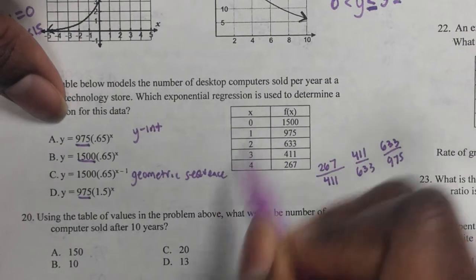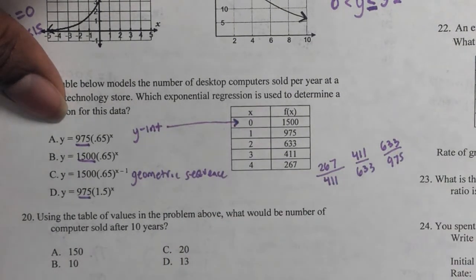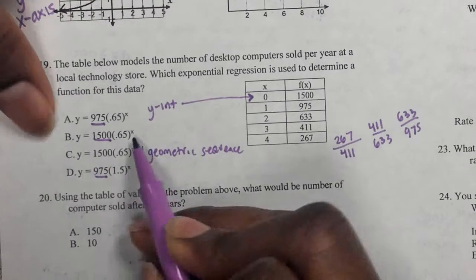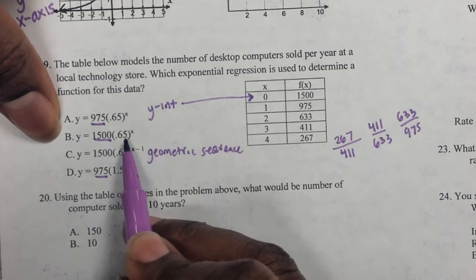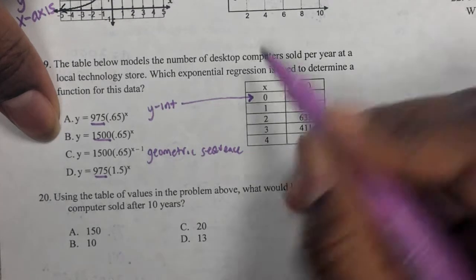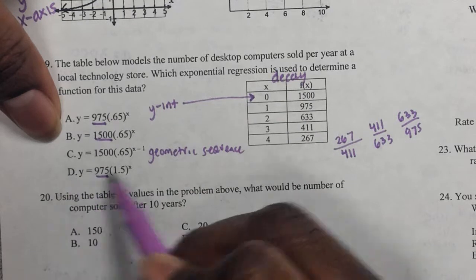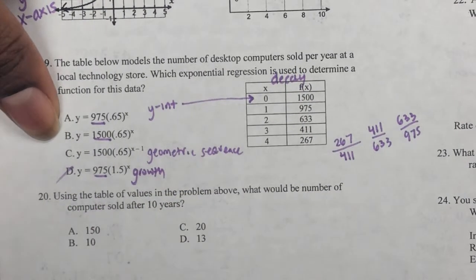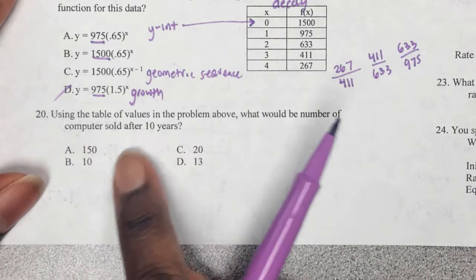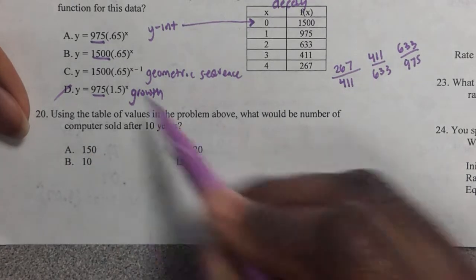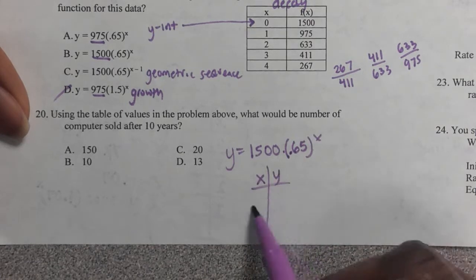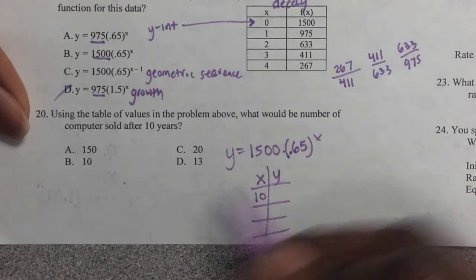And then the other thing you need to be looking for is the y-intercept, because either this, this, or this should be the y-intercept. These three should be the y-intercept. However, look at your table. Where's the y-intercept? The y-intercept is always paired up with the x equals 0. So if it's paired up with the x equals 0, the y-intercept, and the rate should have been 0.65. Look at your table, actually. This table, is it increasing or decreasing? It's a decay table, so that's good to know. That could have helped you eliminate D, because this is growth. All right? So now it says, using the table of values in the above problem, what would be the number of computers sold after 10 years? So you need to take your answer from the above one, which is this. Put it in the calculator, and be looking for where your x equals 10. And that's going to be your answer.